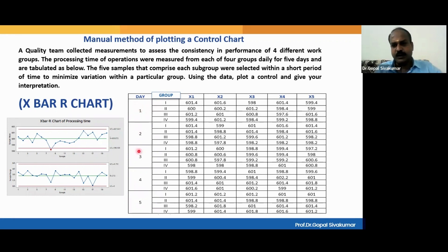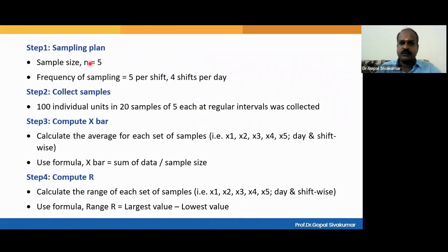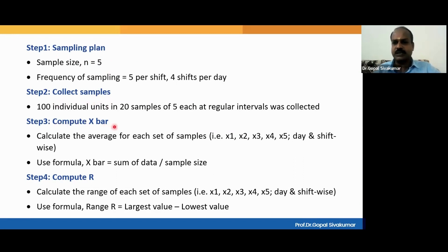Data is collected over a period of five days and every day there are four shifts happening in the company. In every shift, the quality inspector is collecting data five times — every shift is considered a subgroup, so in every subgroup you have five data points. That means the subgroup size is five. In a day you collect four subgroups, over five days — so you have 20 subgroups with five data each, giving a total of 100 data points. Since you have 20 subgroups, you will get 20 subgroup averages and 20 subgroup ranges.